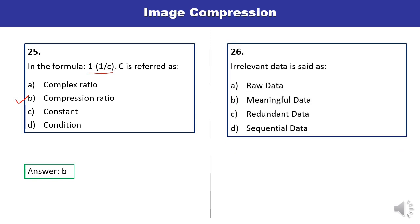Question 26: Irrelevant data is said as — raw data, meaningful data, redundant data, or sequential? Irrelevant data is actually the redundant one. So C is the correct answer.